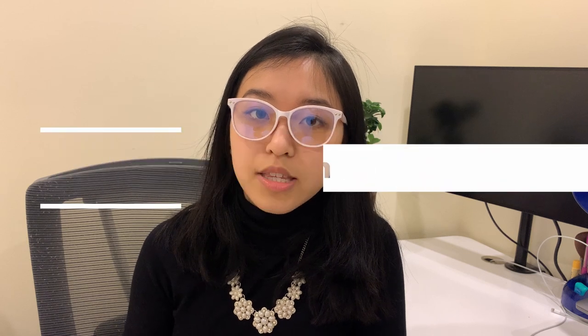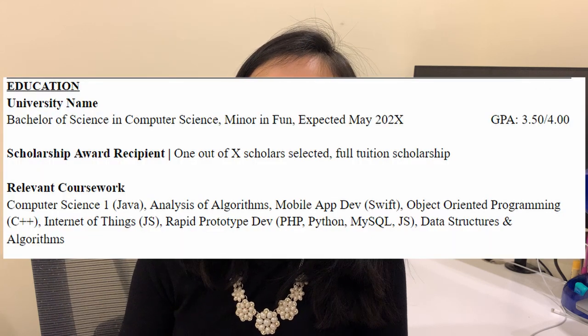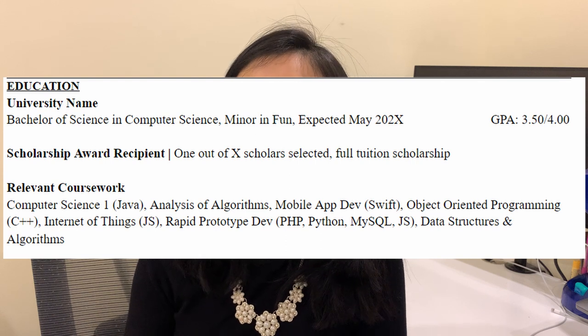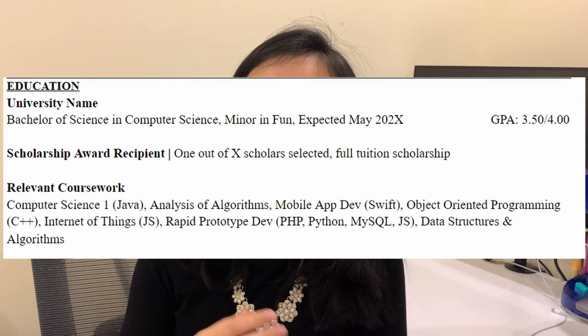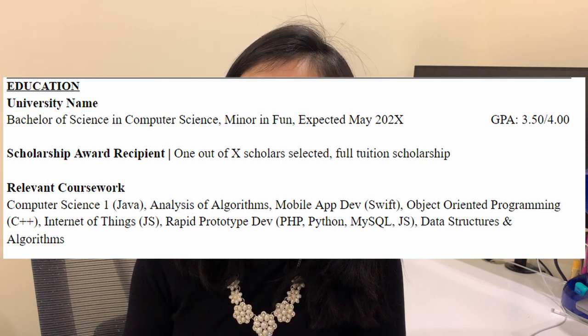After the initial section of basic contact information, I've noticed that most college students and new grads include their education as the next section. Under education you typically include your university, your current major and minor, as well as your GPA. If your GPA is below 3.0 you can consider omitting that from your resume. Under the education section you can also include relevant coursework, scholarships, and other school related awards.